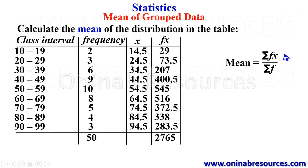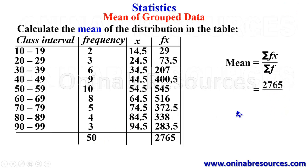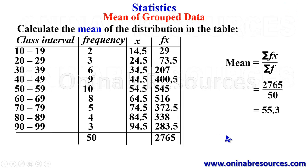We then substitute into the formula. Sigma FX — the summation of the last column — is 2765, divided by sigma F, which is 50. 2765 divided by 50 gives 55.3, which is the mean of the distribution represented in the table.